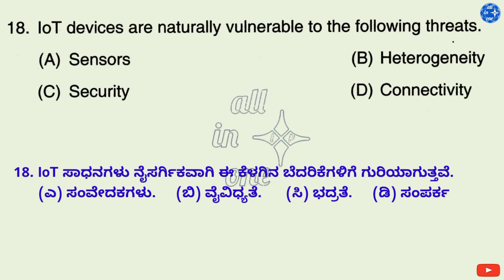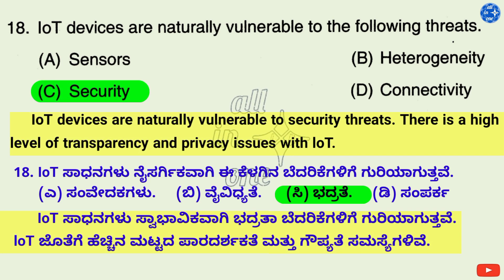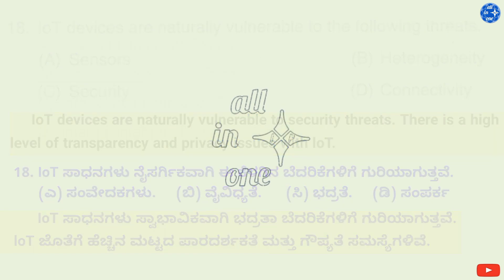Question 18. IoT devices are naturally vulnerable to the following threats — Options: A. Sensors, B. Heterogeneity, C. Security, D. Connectivity. Right answer is C: Security. IoT devices are naturally vulnerable to security threats. There is a high level of transparency and privacy issues with IoT.